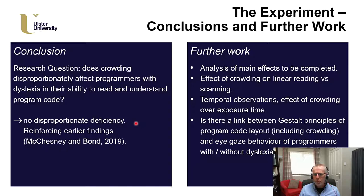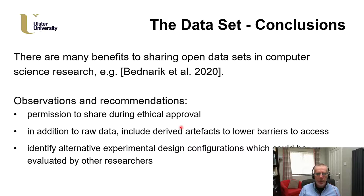To make some conclusions on the data set, which is what we've been trying to focus on in this paper: stating the obvious, there are many benefits to sharing open data sets in computer science research, and many of you in this community are doing that already. Our observations and recommendations would be: make sure you get ethical approval to share at the outset; as well as sharing raw data, include some of the derived artifacts such as visualizations, as this can help lower barriers to access; and try to be explicit about the experimental design decisions that have been made.